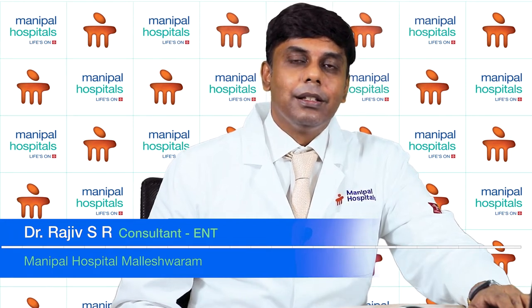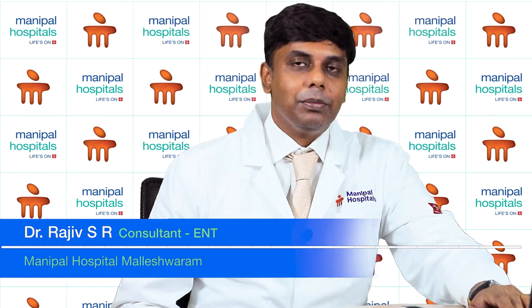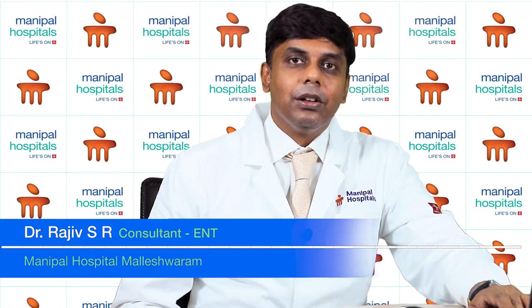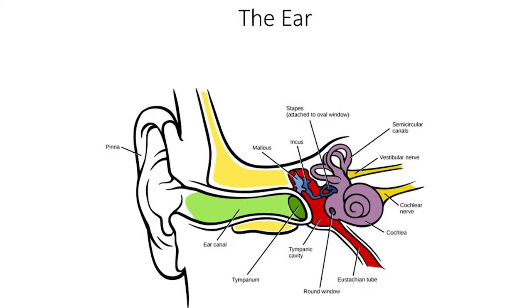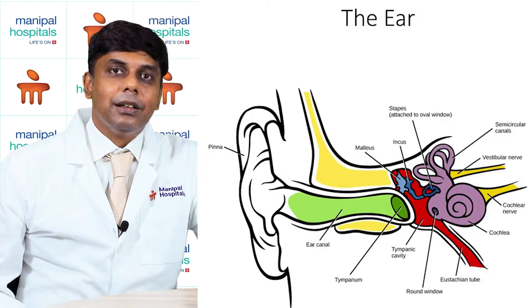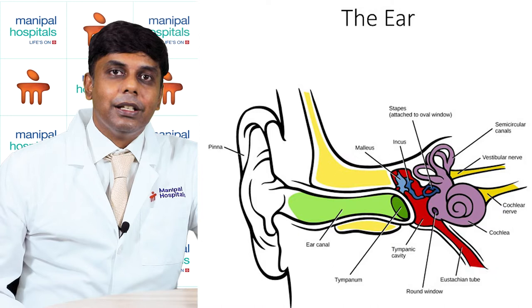Let us understand endoscopic tympanoplasty. All of you must be familiar with this picture, which is a line diagram depicting the parts of the ear. The ear has three parts: the outer ear, the middle ear, and the inner ear.